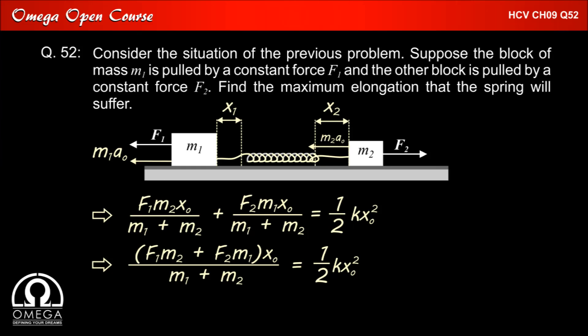Taking x0 as common this becomes F1 M2 plus F2 M1 into x0 divided by M1 plus M2 is equal to half K x0 whole square. Solving for x0 we get 2 into F1 M2 plus F2 M1 divided by K times M1 plus M2, which is our answer.